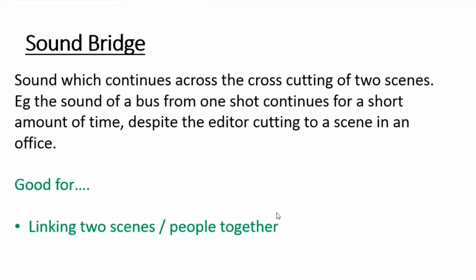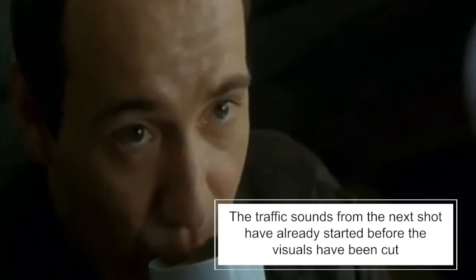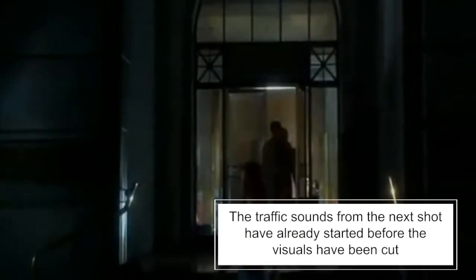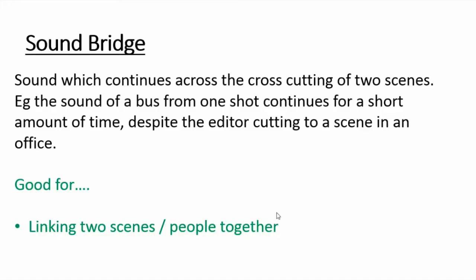A sound bridge is a particular sound which continues across the cutting of two scenes — so if you go from one scene to another, that's cross-cutting, but the sound from one of those scenes continues into the next. It links those two scenes or shots together, and that might connote a link between two places, two people, or two situations.